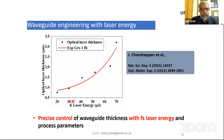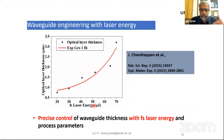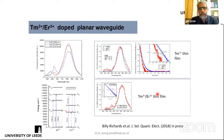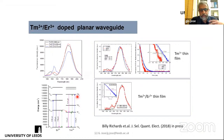We can control the process by varying laser parameters — energy, duration — to control the depth and effective index of the layer, as well as the doping concentration by using targets of different compositions. We can also introduce different combinations of ions, for example thulium and erbium together, showing emission in the longer wavelength range of 1600 to 2000 nm.